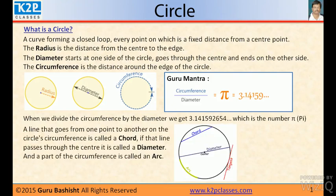A line goes from one point to another on the circle circumference is called a chord. From here it goes here, it is called a chord. And if a chord is passing through center, it is called diameter. And a part of circumference is called arc. From here to here it is arc.